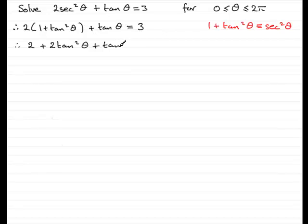I'll expand the bracket now and get 2 plus 2 tan squared theta plus tan theta equals 3. Now, this is a quadratic equation in tan theta, because we've got a tan squared theta term. But what I need to do in order to solve this is to put it in the right format. The squared term first, then the tan theta, and then the constant equals 0. So, I'll rearrange that. So, we've got 2 tan squared theta plus tan theta. And then I'm going to subtract 3 from both sides. So, we've got 2 take away 3, which is minus 1, and it equals 0.